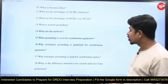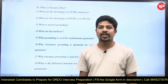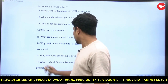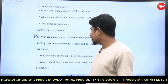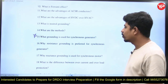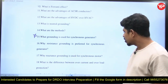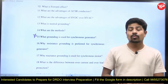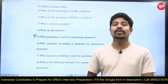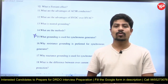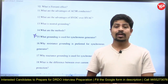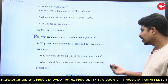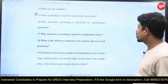What grounding is used for a synchronous generator? Resistance grounding is used for synchronous generators to improve power system stability. This is a very good question. Why is resistance grounding preferred for synchronous generators? To improve power system stability. Why is reactance grounding used for synchronous motors? Synchronous motors mostly operate at overexcited conditions; if overexcited, there is excess reactive power, so an inductor connected from neutral to ground — reactance grounding — absorbs that excess reactive power.